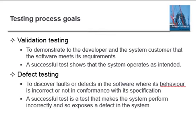A successful test shows that the system is operating the way it is intended. For defect testing, the goal is to discover faults and defects where behavior is incorrect or not in conformance with its specification. A successful defect test is one that makes a system perform incorrectly and so exposes the defect in the system.